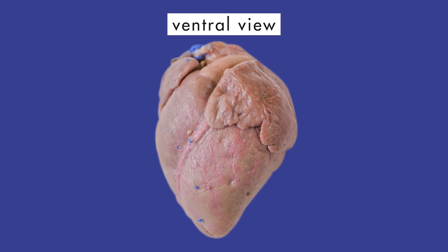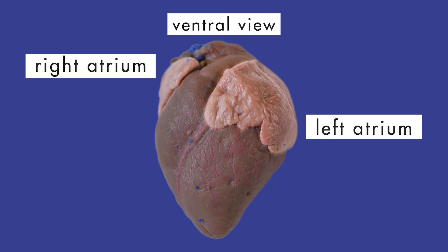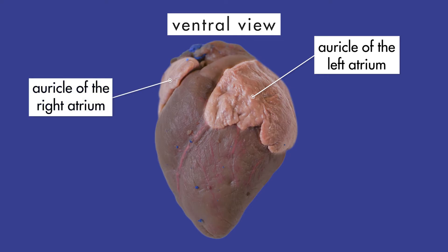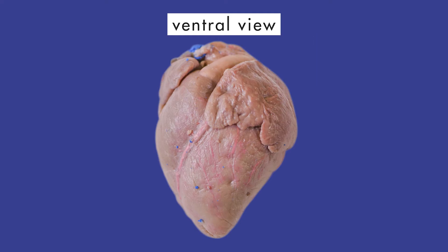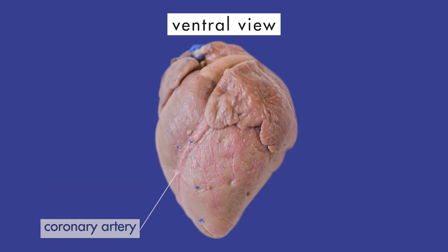Here is a ventral view of the pig's heart. Its heart is divided into four chambers. The two upper chambers of the heart are the left atrium and the right atrium. We cannot see the atria because each atrium is hidden beneath a pouch called an auricle. We see the auricle of the left atrium and the auricle of the right atrium. When an atrium receives blood, the auricle expands to increase the capacity of the atrium. The two lower chambers of the heart are the left ventricle and the right ventricle. We can see the major coronary artery that supplies blood to the heart muscle.